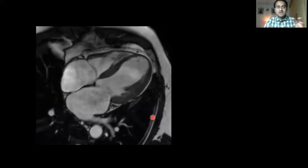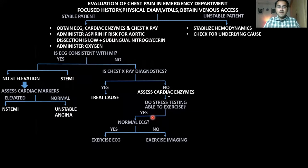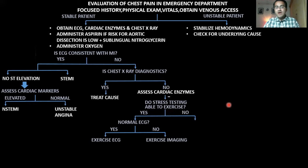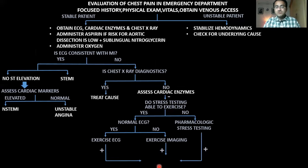Exercise imaging and exercise ECG can give you positive findings. But if the patient cannot exercise, you have to pharmacologically stimulate the heart using drugs like dobutamine to make the heart work more. When the heart works more, its oxygen demand increases, and if oxygen demand and supply are unequal, there will be ischemia that you pick up by ECG or echo. If all tests show positive findings of ischemia and stenosed vessels, you need to determine which vessels are stenosed and the extent of stenosis.